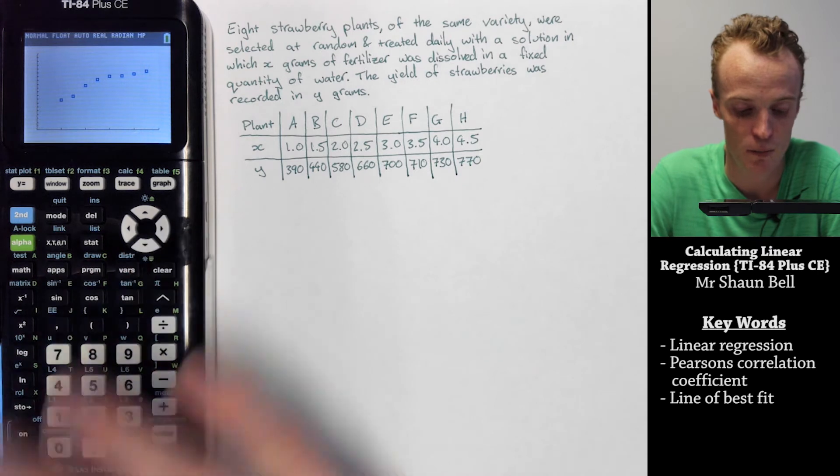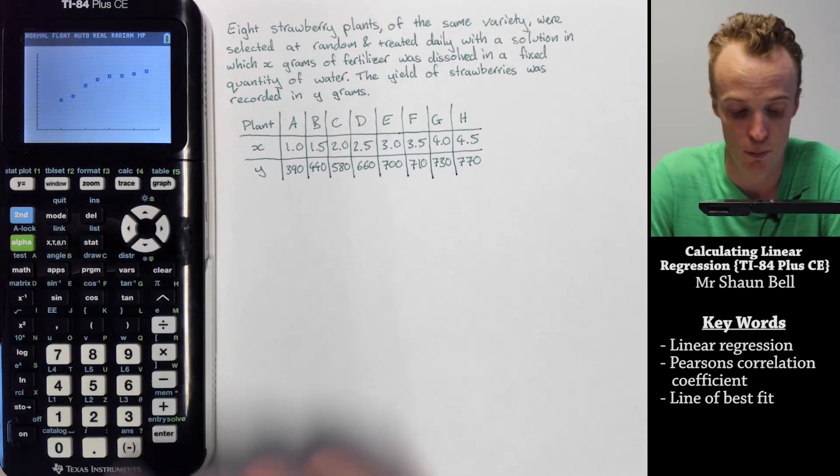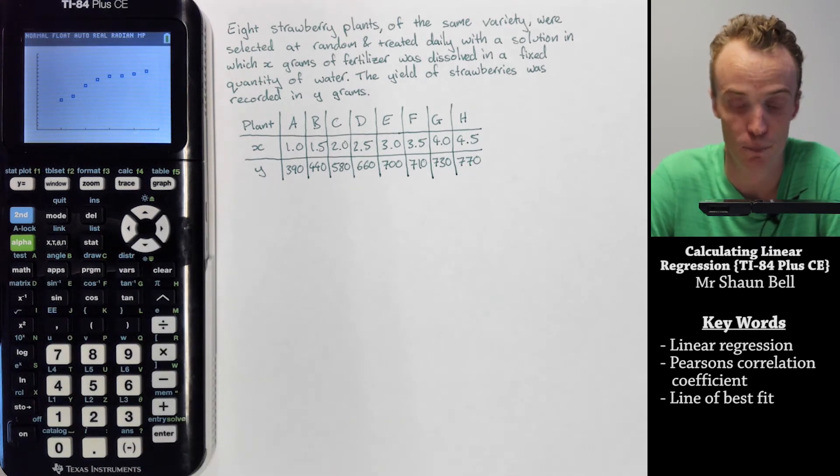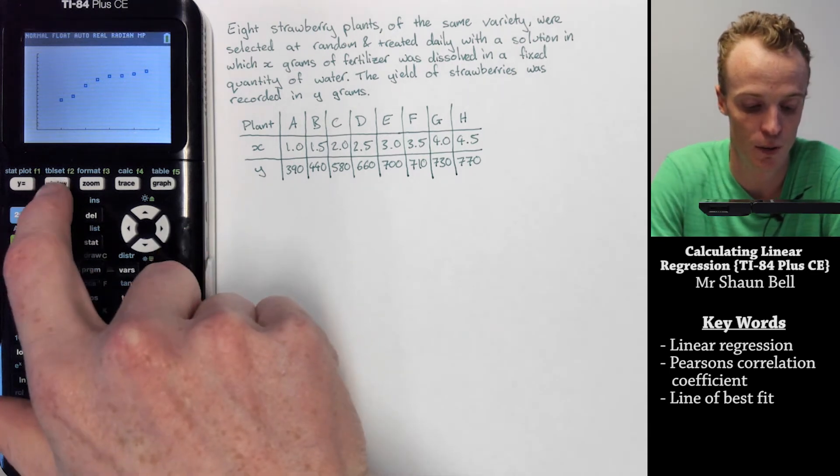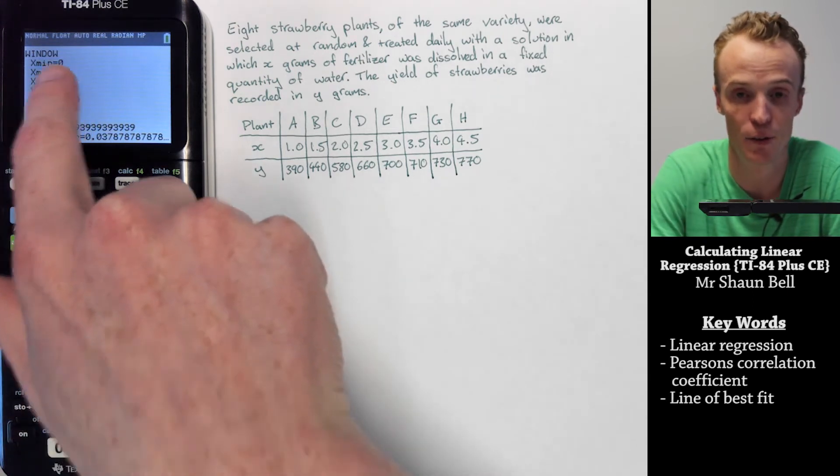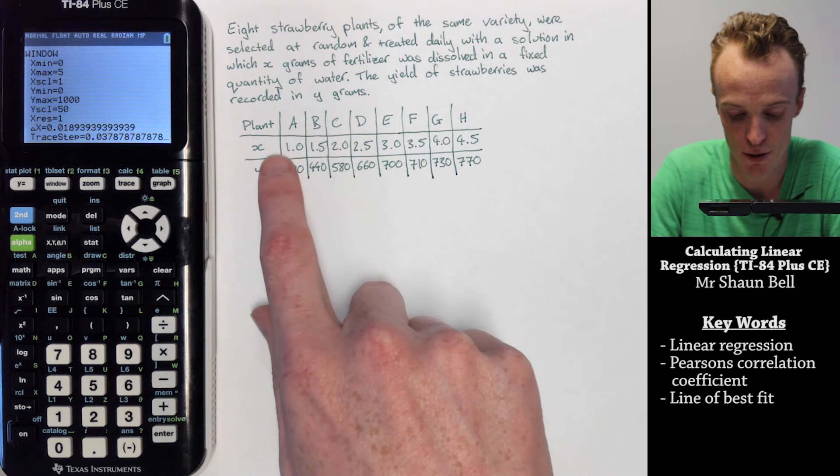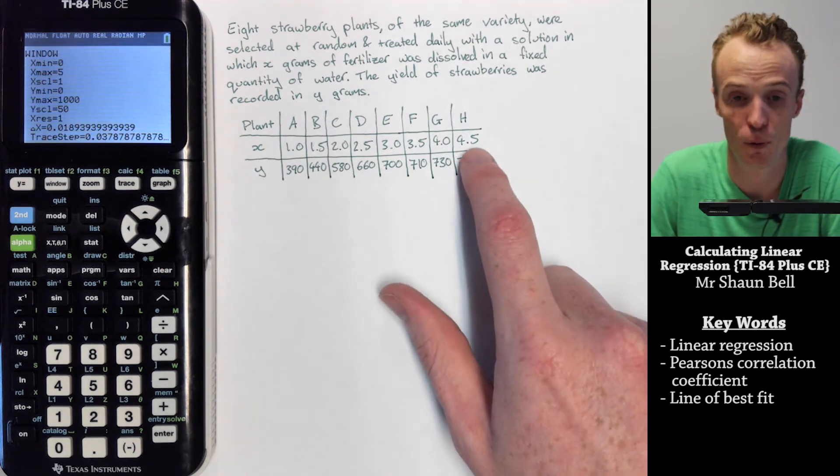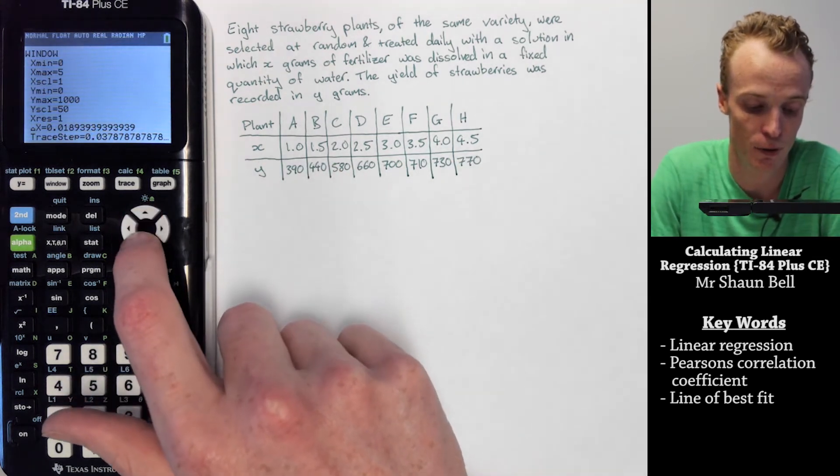Now I've already adjusted my view window to fit this parameter to graph nicely. However, you may need to adjust yours. To adjust your view window, hit the window button and look at your x values. In this case, my x values range from 1 through to 4.5, so I decided to graph mine from 0 through to 5 with a scale of 1.